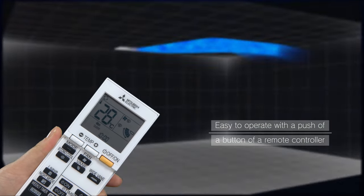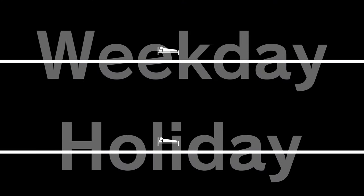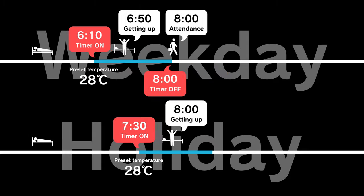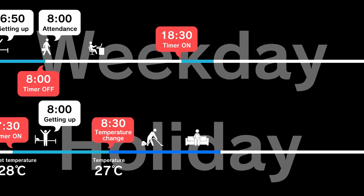The remote controller is easy to operate with just a push of a button. The weekly schedule timer is useful for everyday life. This feature helps desired temperatures and operation to be set easily to match lifestyle patterns.